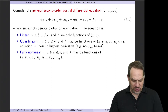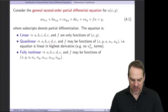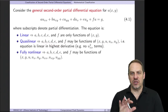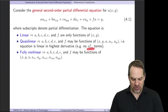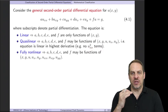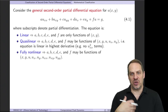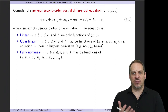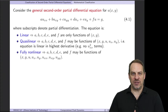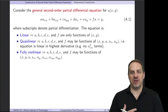Now if the coefficients a, b, c, d, e, and f are only nonlinear because of u and first derivatives in those coefficients — in other words, there are no second derivatives of u in the a, b, c, d, e, f coefficients — then we call it quasi-linear. Strictly speaking, it's still nonlinear, but we call it quasi-linear, quasi meaning almost.